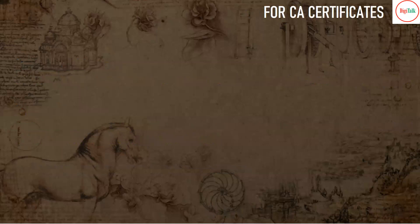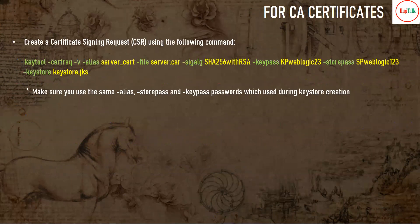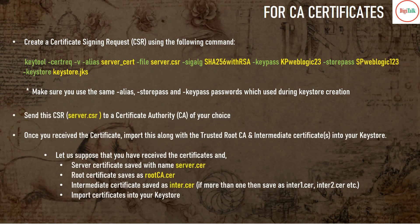If you are planning to configure WebLogic with a CA certificate or third-party certificate, you must generate a CSR — a Certificate Signing Request. The command shown on screen will generate a CSR file named server.csr. Once generated, send this CSR file to the certificate authority. After that, the certificate authority will issue three certificates: the root certificate, intermediate certificate, and your server certificate — the digitally signed certificate. Once received, import all three certificates into your keystore.